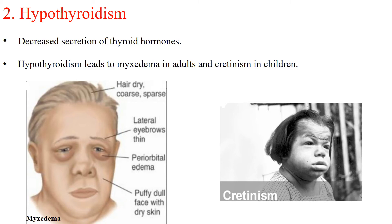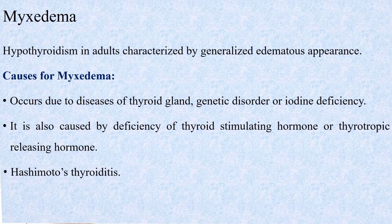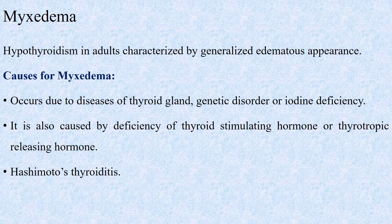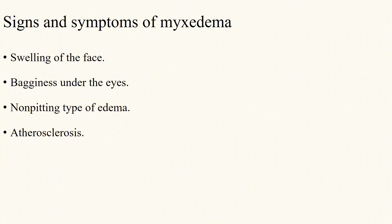Hypothyroidism: decreased secretion of thyroid hormones is called hypothyroidism. Hypothyroidism leads to myxedema in adults and cretinism in children. Myxedema is hypothyroidism in adults characterized by generalized edematous appearance. Myxedema occurs due to diseases of the thyroid gland, genetic disorder, or iodine deficiency. It is also caused by deficiency of thyroid stimulating hormone or thyrotropin-releasing hormone. The common cause of myxedema is the autoimmune disease called Hashimoto's thyroiditis, which is common in late middle-aged women. It starts with glandular inflammation called thyroiditis caused by autoimmune antibodies, and later leads to destruction of the gland.